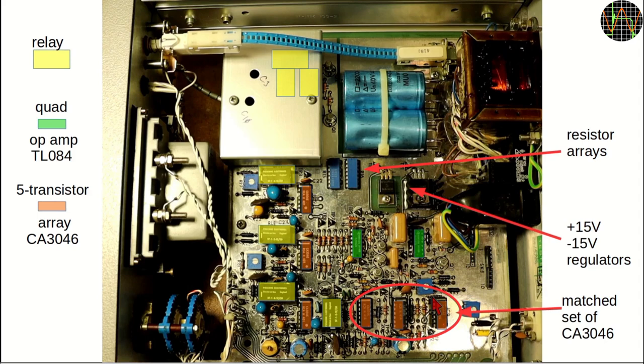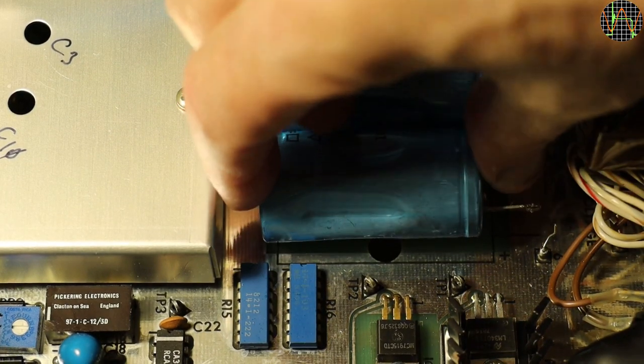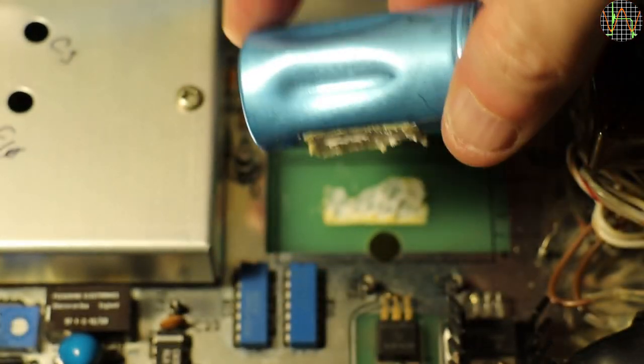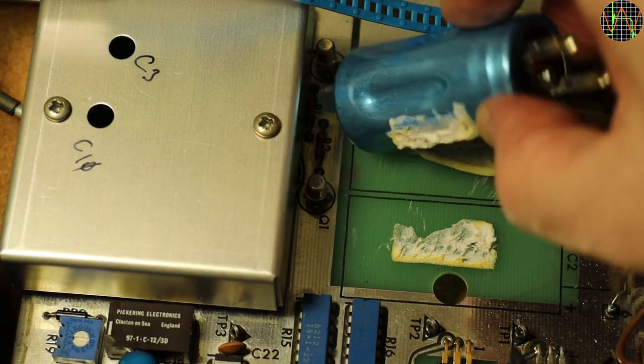There are two quad op-amp ICs marked in green, apart from some resistor arrays and the regulators for the ±15V coming from a linear power supply. The shielded box contains the input circuitry which is of course especially sensitive. Next to it are the two huge electrolytic capacitors for the power supply. It took me ages to get the capacitors out because they were actually glued in and that glue had not lost anything of its sticking power.